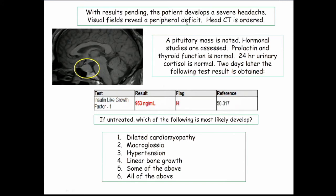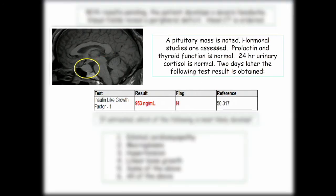This guy never had a headache in his life. About two weeks after I see him, he develops a severe headache. Visual field check reveals a peripheral deficit and a head CT is obtained — he has a big pituitary tumor. So we know he has a pituitary tumor and his glucose is out of control. Hormonal studies are ordered.